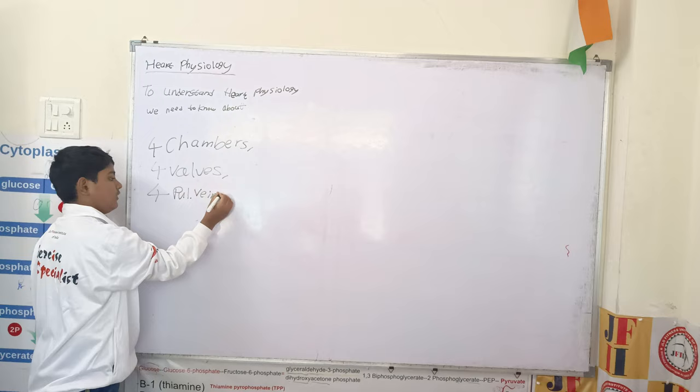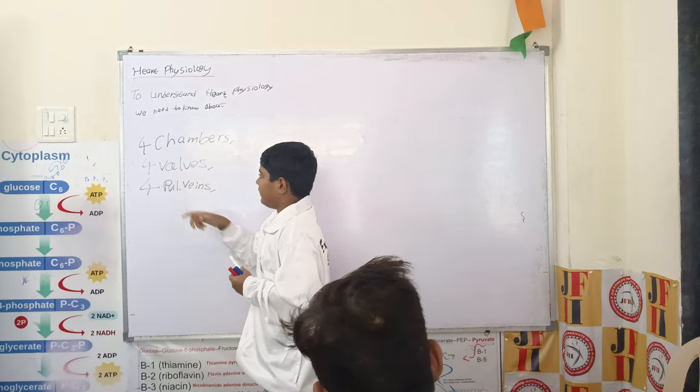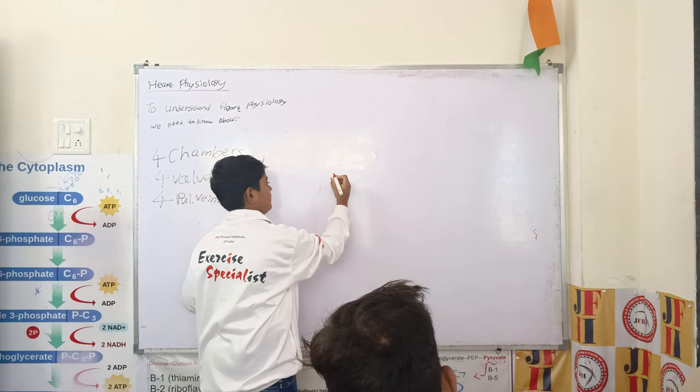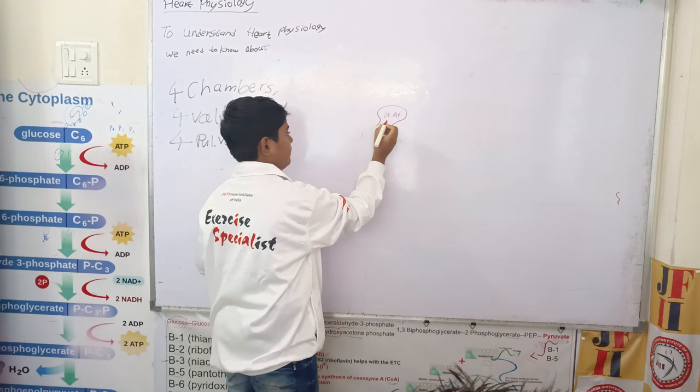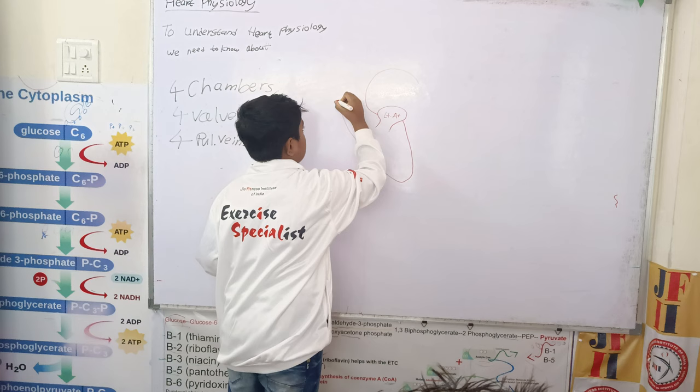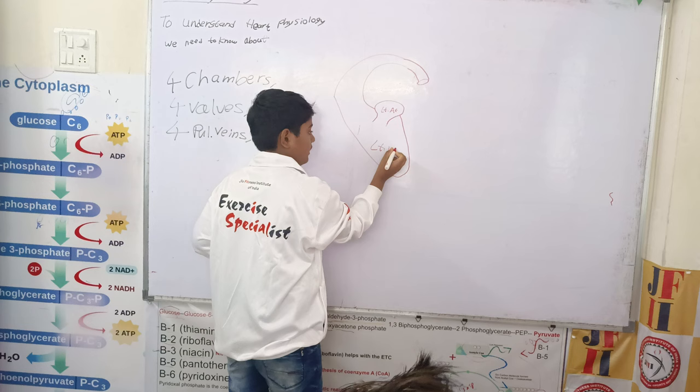Now first we are going to learn about the four chambers of the heart. The first chamber is the left atrium. This is the left atrium, and this is the left ventricle.